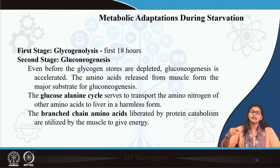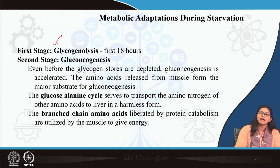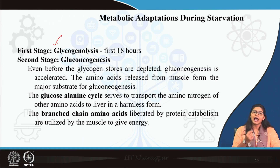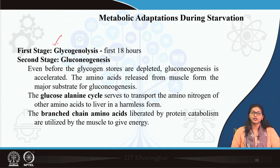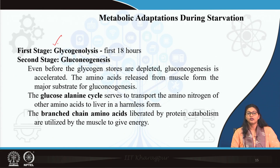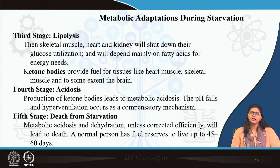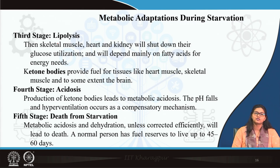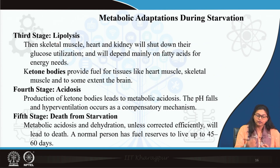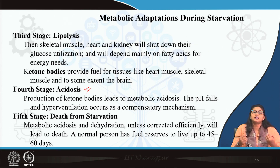Accumulated acetyl-CoA is diverted to ketone body formation — ketone bodies are an important fuel for the brain in fasting. In the gradual adaptation to starvation: first glycogenolysis occurs for the initial 18 hours; even before glycogen stores are depleted, neoglucogenesis begins using amino acids such as alanine from muscle protein breakdown; branched-chain amino acids liberated by protein catabolism are utilized by muscle for energy. Then lipolysis begins — triacylglycerols are broken down to fatty acids for beta-oxidation, and ketone bodies are formed, eventually leading to ketosis and ketoacidosis.